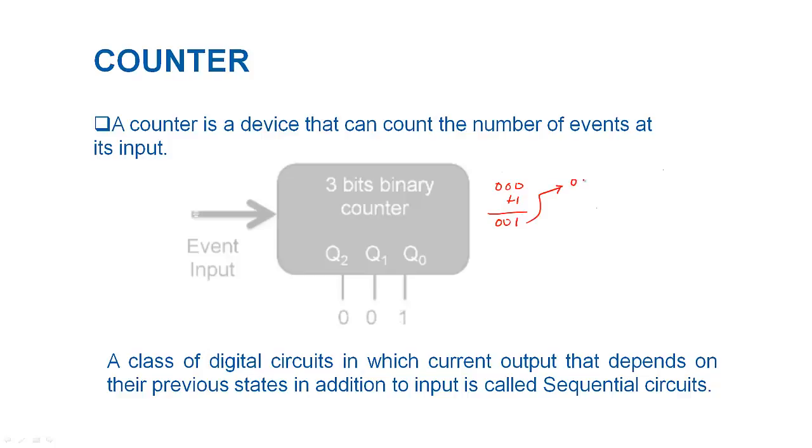Instead it also depends on what was the previous output of the counter. As the output is incrementing every time, so the device is making use of previous output to get a new output. In other words, the next output is calculated by using the current output of the device.